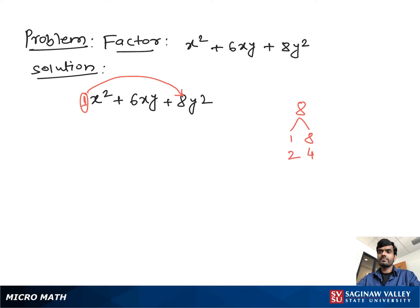Then we find the factors of 8, which are 1×8 and 2×4. Now find a pair of numbers which when multiplied give us 8 and when added give us 6. That pair is 2 and 4.